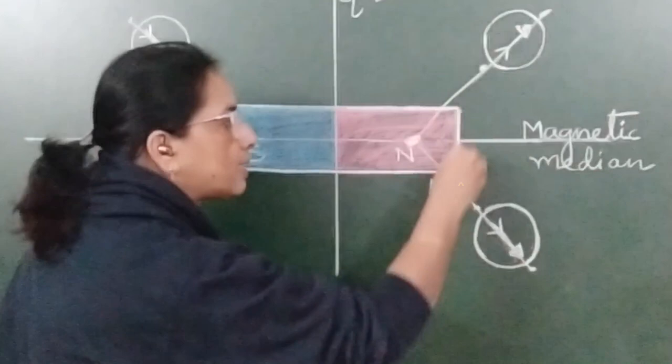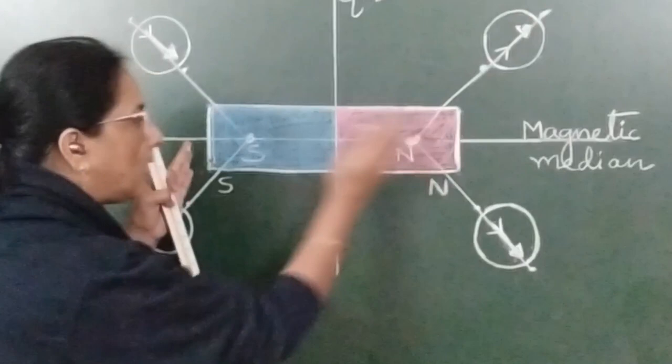This end and this end are the geometric poles. A bit inside to the geometric poles lies the magnetic poles.